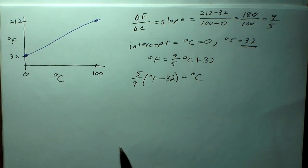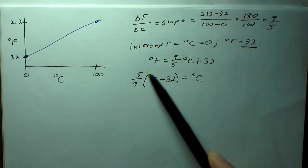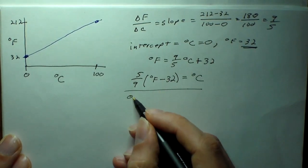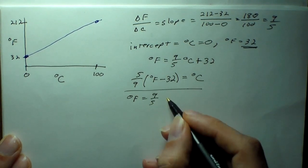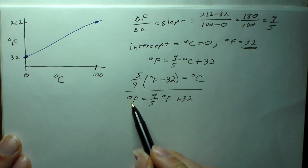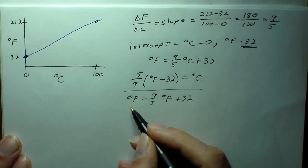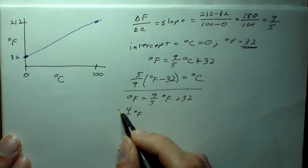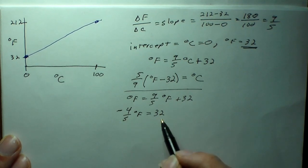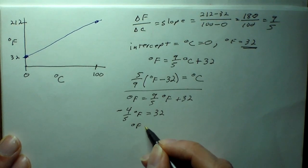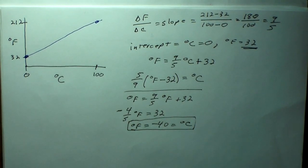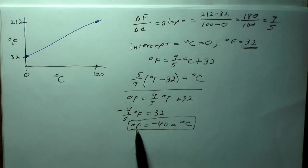One interesting temperature is when degrees Fahrenheit is actually equal to degrees Celsius. We can solve for this: degrees Fahrenheit equals 9/5 times degrees Fahrenheit plus 32. That gives us negative 4/5 times degrees Fahrenheit equals 32, so degrees Fahrenheit equals negative 40. That's also negative 40 degrees Celsius — so at negative 40, both scales read exactly the same temperature.